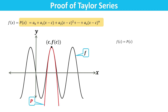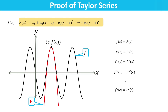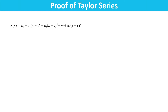One way to do this is to impose the additional requirement that the first, second, third, and so on up to the nth derivative of the polynomial function be the same as the first, second, third, and so on up to the nth derivative of the function f at point c. To find all derivatives of p at x equals c, we have to find all required derivatives of p, which is very easy.